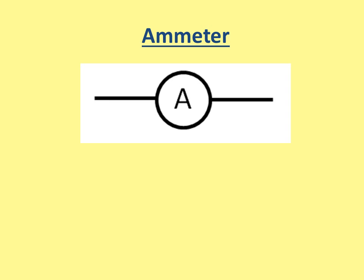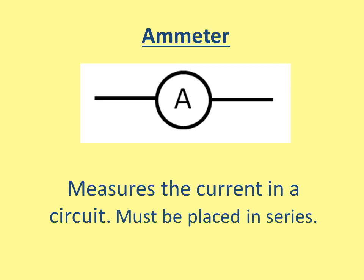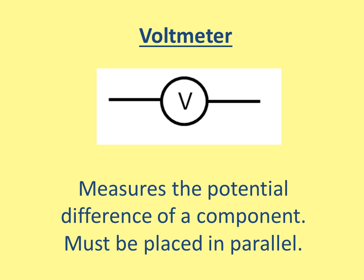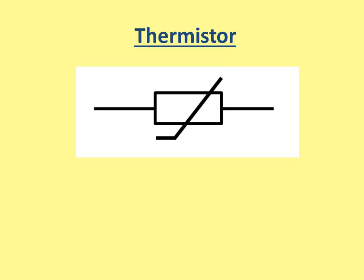This is an ammeter. An ammeter measures the current in a circuit and it must be placed in series — we'll look at how to connect an ammeter in the next video. A voltmeter is used to measure potential difference across a component. In the next video we'll also look at how to connect a voltmeter in parallel.